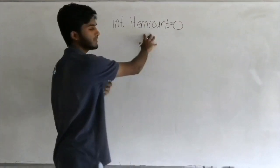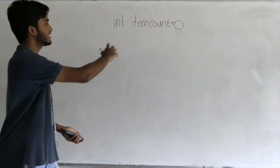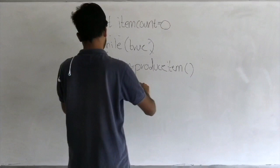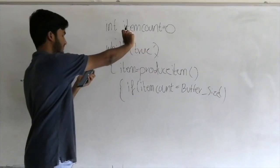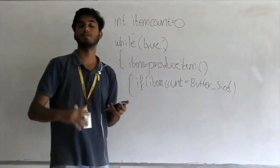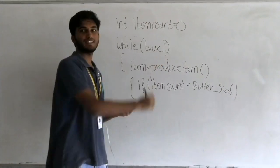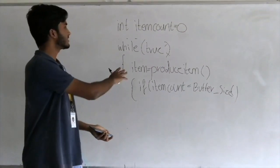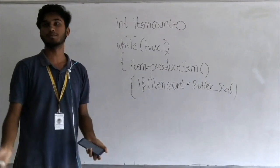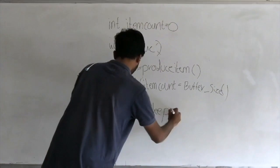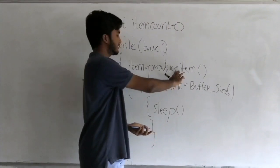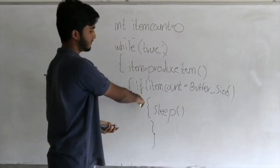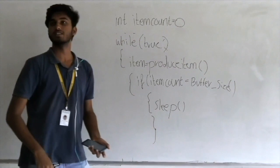Item count is the number of items in the buffer, initialized to zero because initially there's nothing in the buffer. The producer block begins with a while-true statement, meaning it runs infinitely. The problem for the producer is when the buffer becomes full and it can't put anything into it. The produce-item line tells the producer to produce an item. Then we have an if-block: if item count equals buffer size.